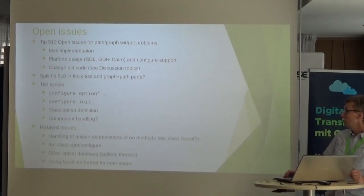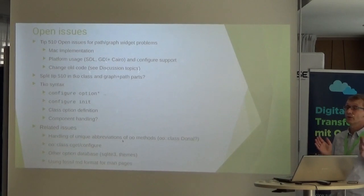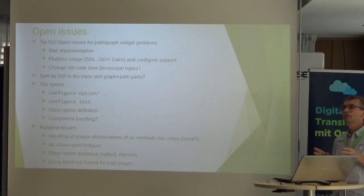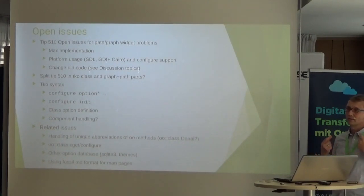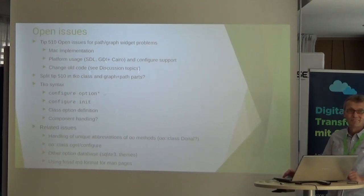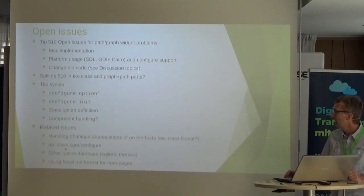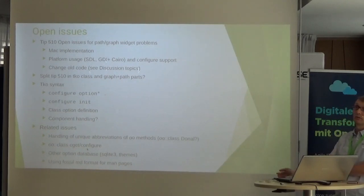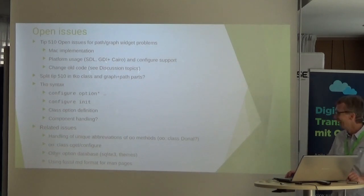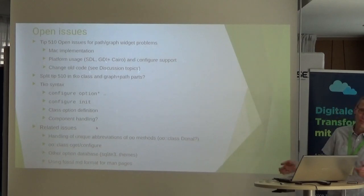Other related issues include handling unique abbreviations of OO methods — currently with TK widgets you can abbreviate method names, but that is not currently possible in OO. Also, CGET and configure could be added to OO class and further options as well.